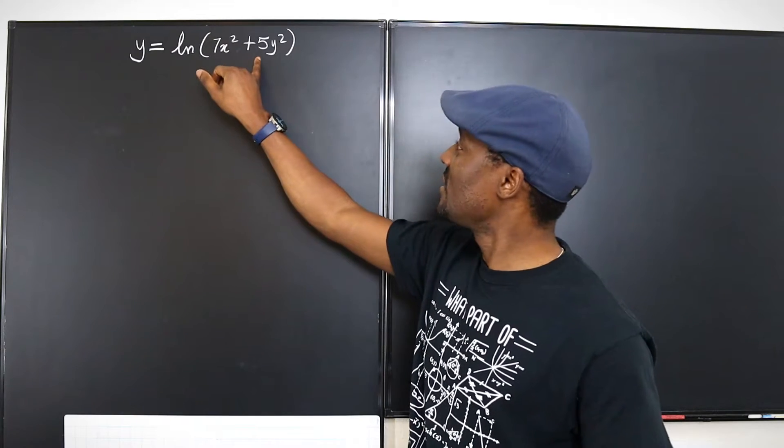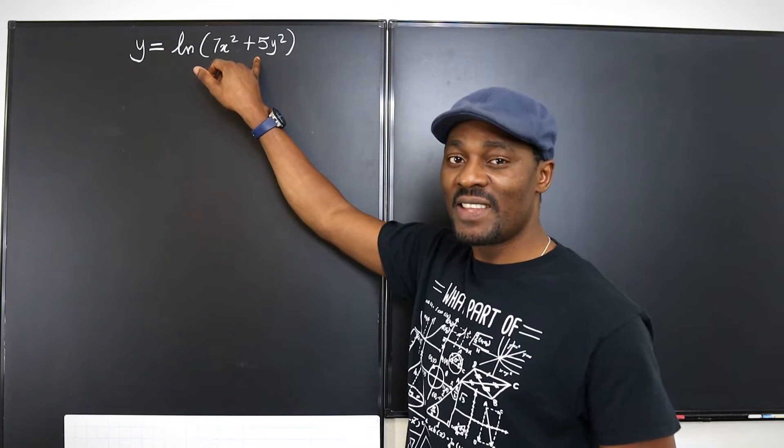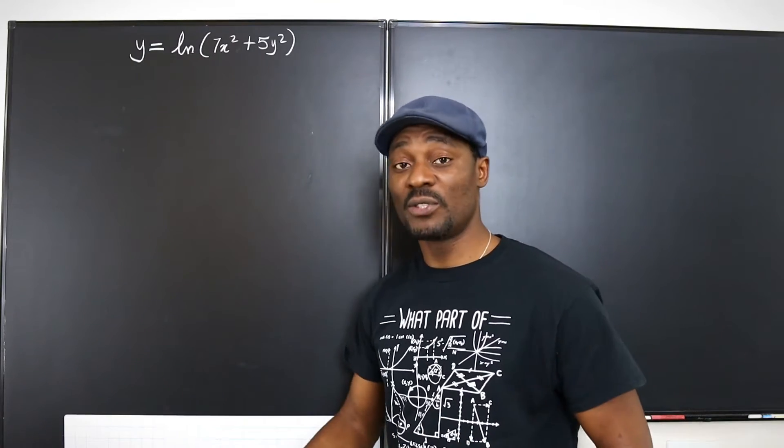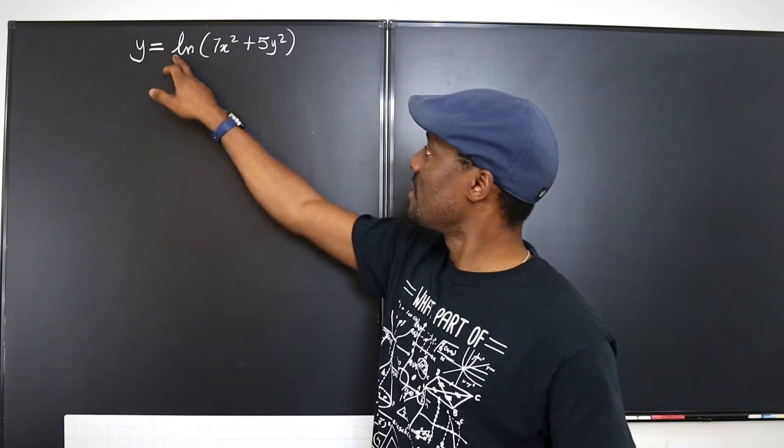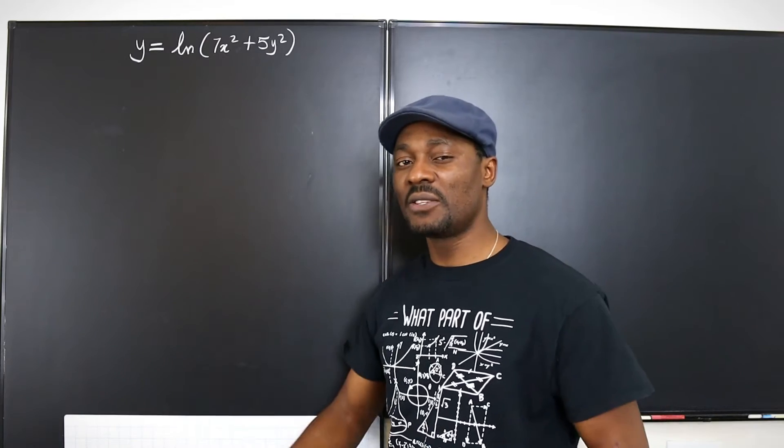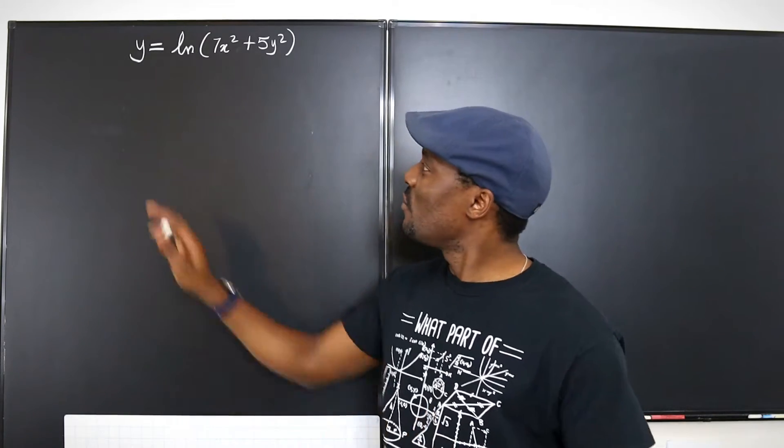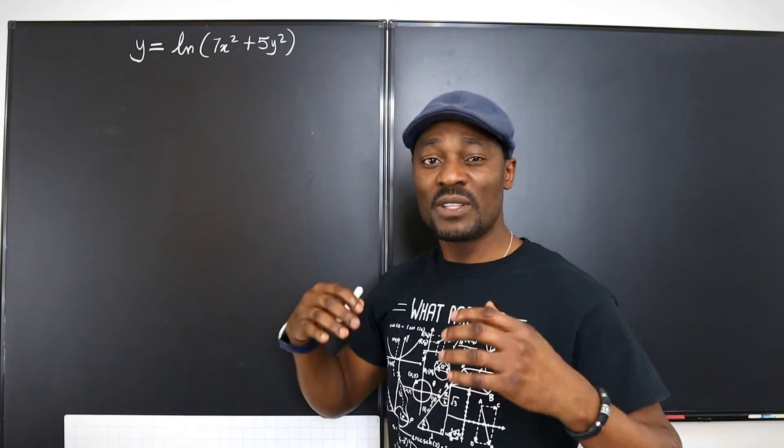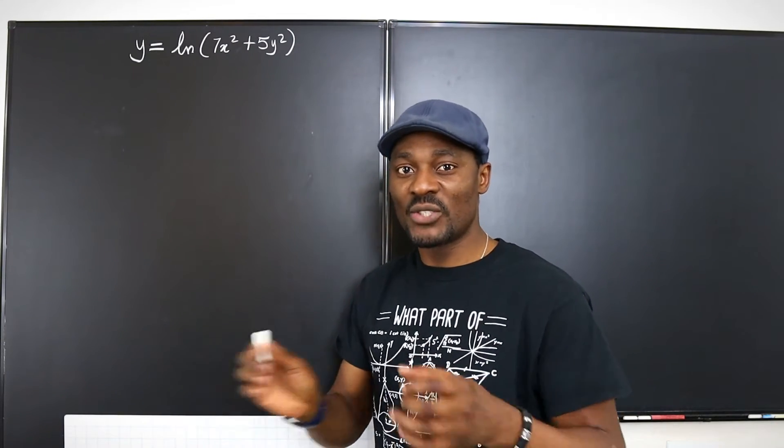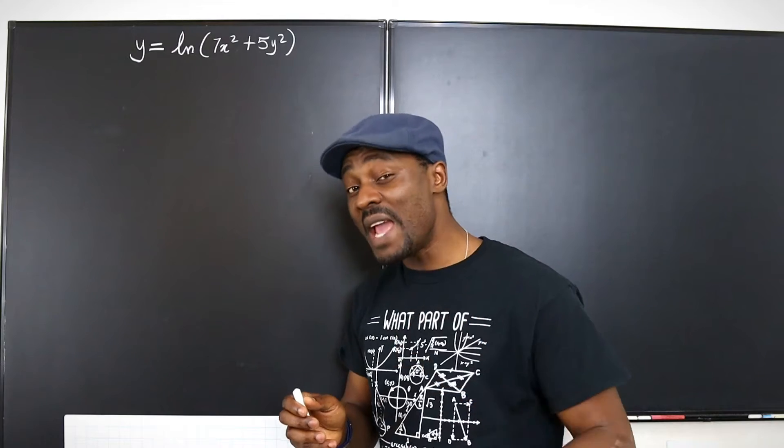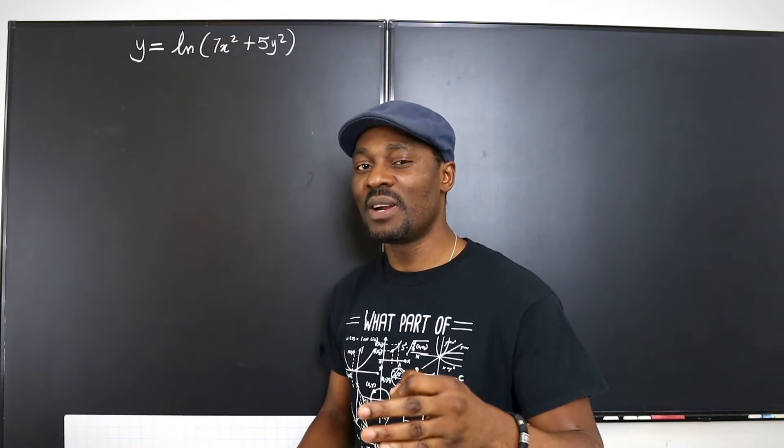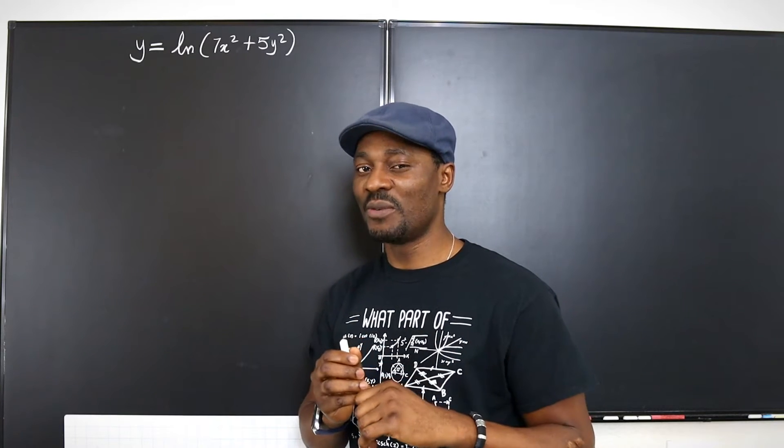However, as you can see, y is stuck inside the argument of this natural log on the right hand side. So that means we have to do chain rule because this is a composite function and at the end of the day we will have dy/dx on this side. We have dy/dx on this side and with good algebra skills you can isolate dy/dx. And the main skill you need today is not just differentiation but algebra, how to isolate terms.